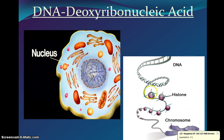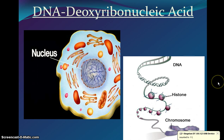DNA makes chromosomes and as we mentioned earlier it coils around something called histones, and histones are basically proteins that are found along the DNA. The DNA is wound up so tightly around the histones that it's kind of like a rubber band when you wind it really really tight — it winds up on itself, and this is exactly what chromosomes are made of.